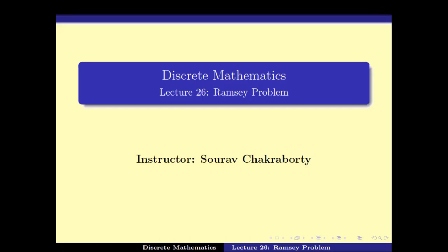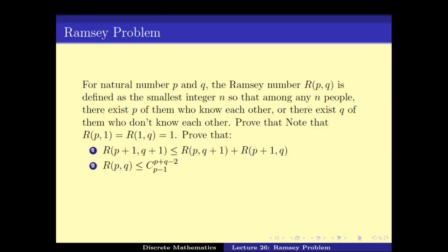Welcome back. We continue with our study of solving problems using graph theory. In this video lecture we will be looking at the Ramsey problem. The problem says that for any natural numbers p and q, if we define R(p,q) to be the smallest integer n so that for any n people, there exist p of them who know each other or q of them who don't know each other.